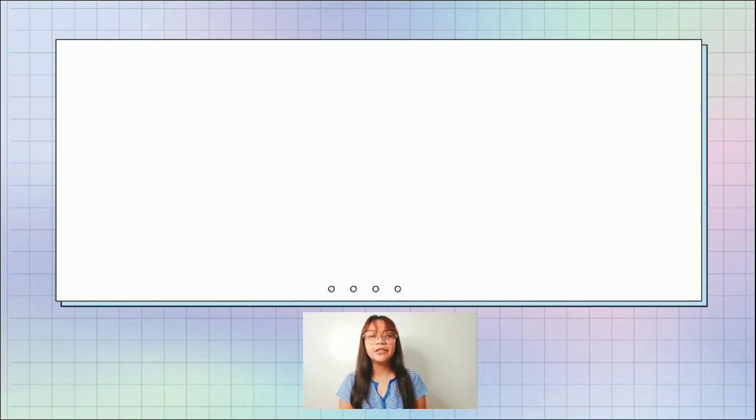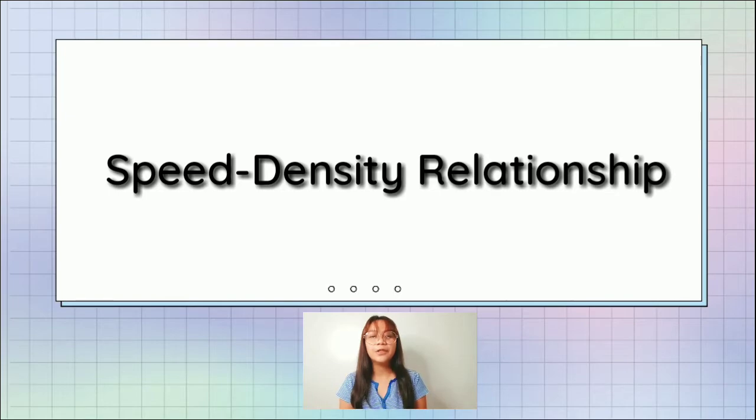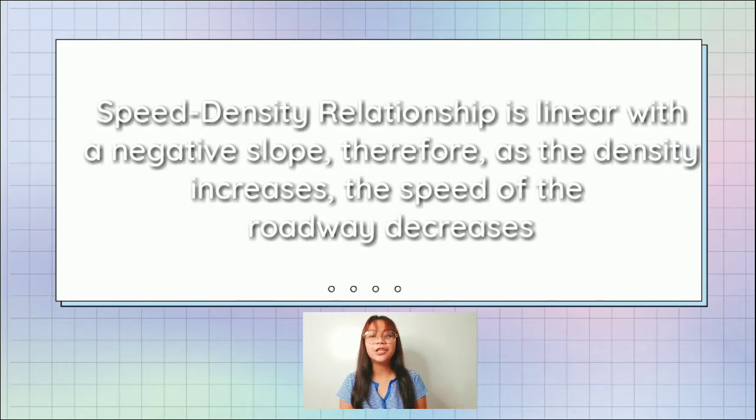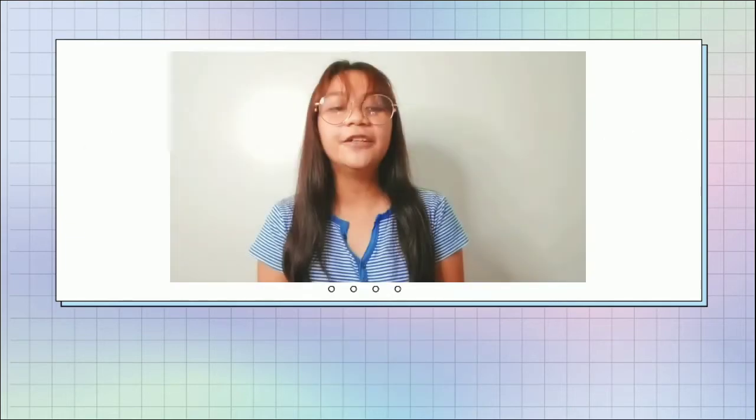The next one is speed-density relationship. It has a formula of U equals C1 exponential relationship quantity of negative C2 times K, where C1 and C2 are constants. The speed-density relationship is linear with a negative slope. Therefore, as the density increases, the speed of the roadway decreases.